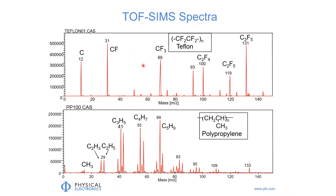These are typical mass spectra obtained from two polymers — one is Teflon, the other is polypropylene. The mass-to-charge ratio is plotted on the x-axis and intensity on the y-axis. As you can see in these SIMS spectra, there are fragmentation patterns that occur, and those fragmentation patterns give us very important information about the chemistry of our sample. The fragmentation patterns generated in SIMS are not directly comparable to those from other mass spectrometers that use electron impact ionization, but even so, they are very important and useful.